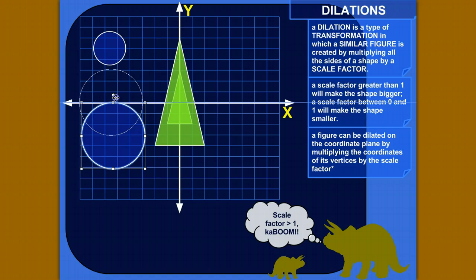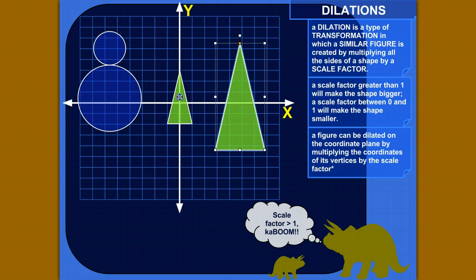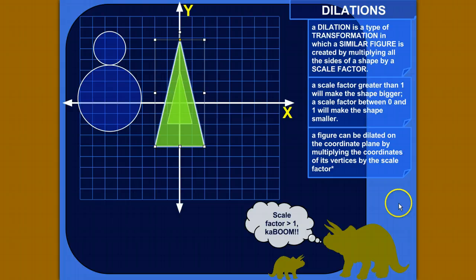You can get into the details in other lessons, but the main idea is you're taking a shape, for example, this little triangle, and you're expanding it into a shape that is a similar figure. So it's the same shape, it's just a bigger version of itself, or a smaller version.